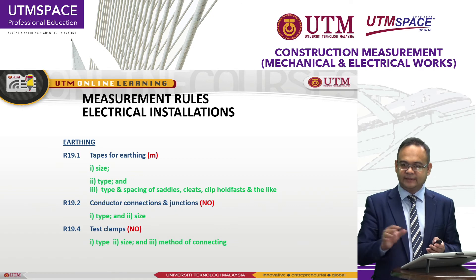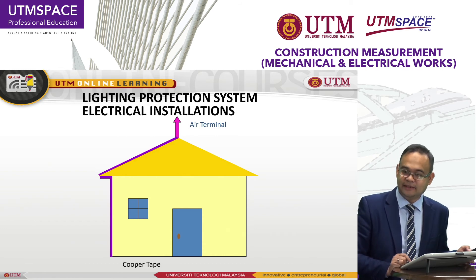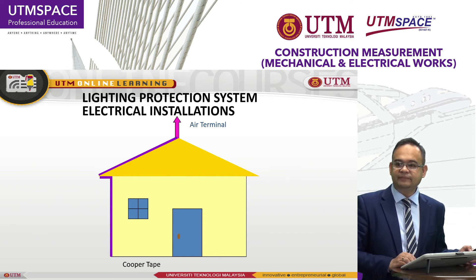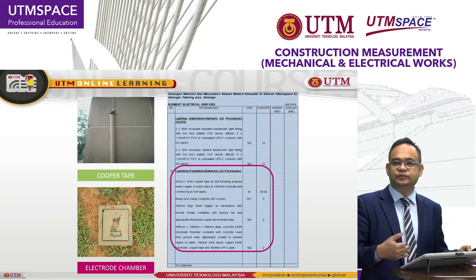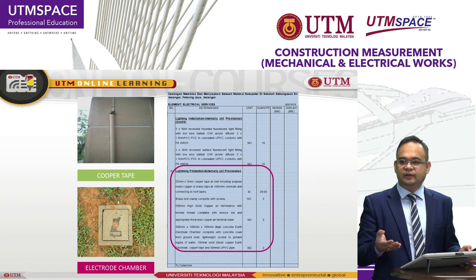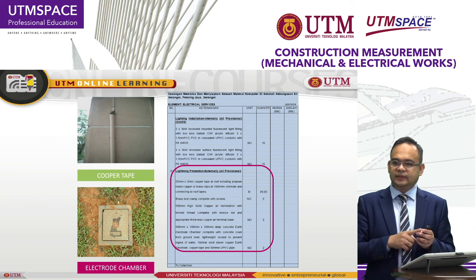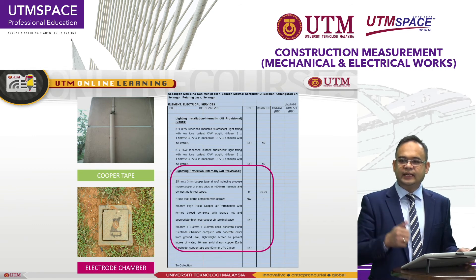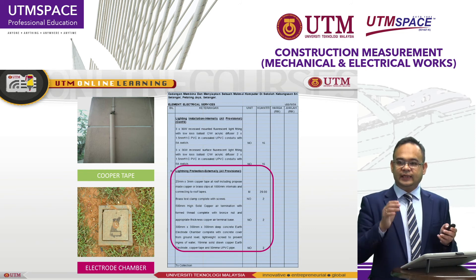Normally, when we want to do the testing and commissioning, we need to test the workability of this lightning protection system using a test clamp. At the top is the air terminal, connected to the building using a copper tape, and then brought to the nearest soil — what we call the electric pit or chamber. In a Bill of Quantities, we have four main items: first, the air terminal; second, the copper tape; third, the earth electrode chamber; and fourth, the test clamp. These are the four main components of the lightning protection system.